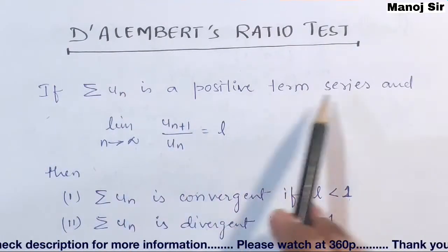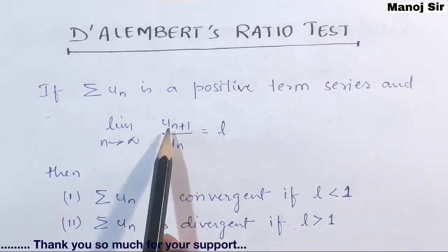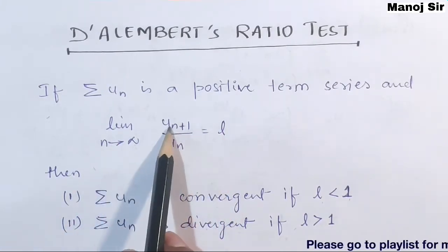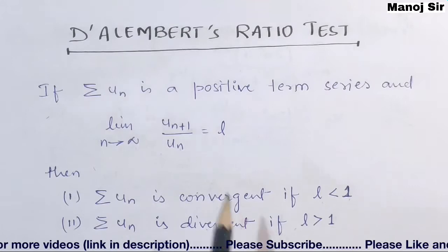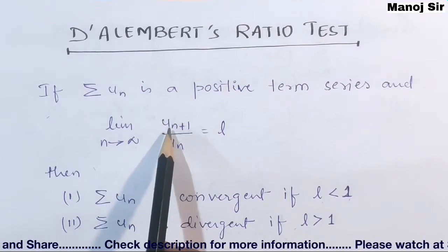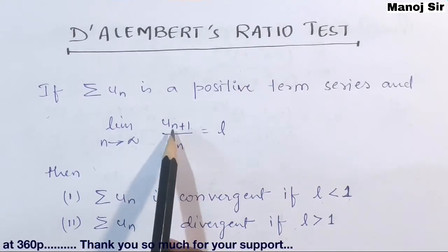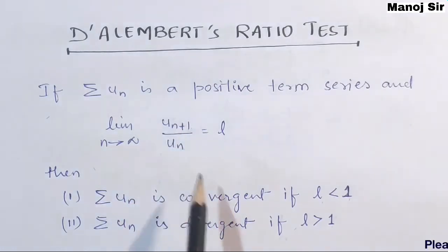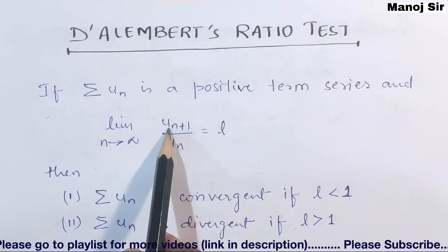summation UN is a series of positive terms and the limit as n tends to infinity of UN+1 upon UN equals L — L may be any number. UN is the nth term of this series, and UN+1 is obtained by replacing n with n+1 in UN. So if summation UN is a positive term series and limit n tends to infinity of UN+1 upon UN equals L,